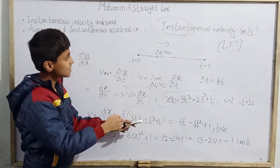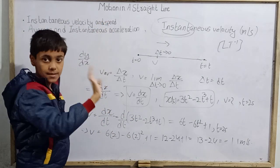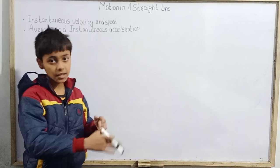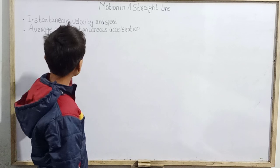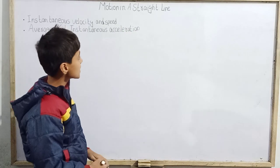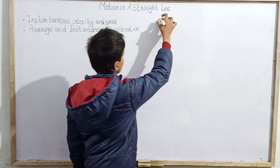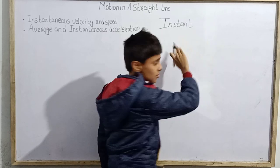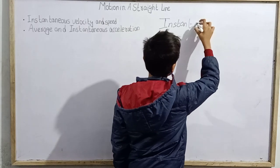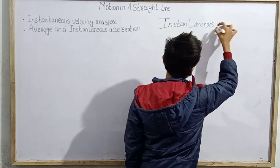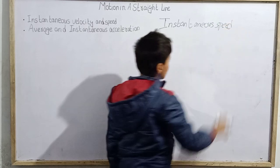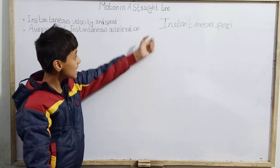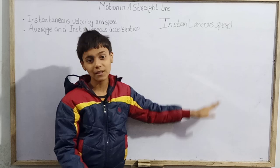We have covered instantaneous velocity. Now let's cover instantaneous speed. Instantaneous speed — there is nothing much different from instantaneous velocity. Just understand the difference between instantaneous speed and instantaneous velocity.